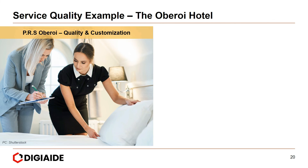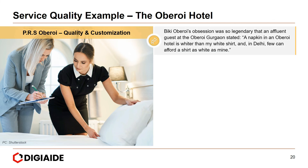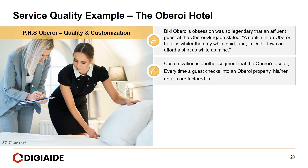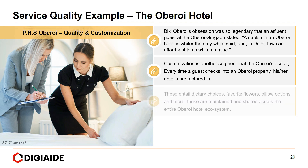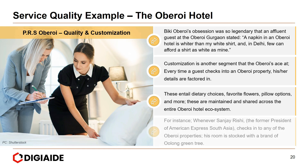Again in the case of PRS Oberoi — quality and customisation. Bicky Oberoi's obsession was so legendary that an affluent guest at the Oberoi Gurgaon in India stated, 'A napkin in an Oberoi hotel is whiter than my shirt, and in Delhi, few can afford a shirt as white as mine.' Customisation is another segment that Oberoi excels at. Every time a guest checks into an Oberoi property, his or her details — dietary choices, favourite flowers, pillow options and more — are factored in and shared across the entire Oberoi hotel ecosystem. For instance, whenever Sanjay Rishi, the former president of American Express South Asia, checks into any Oberoi property, his room is stocked with a brand of Oolong green tea.